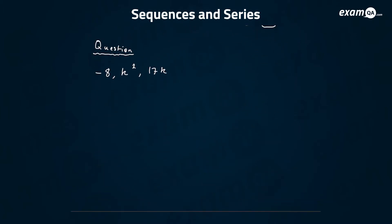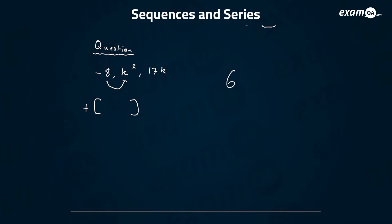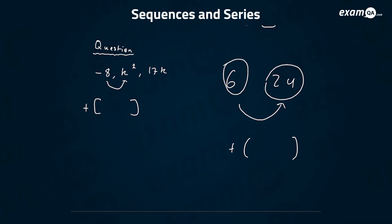For this question, let's work out the common difference. This common difference — this 'plus something' — is the next term take away the previous term. Just like if we went from six to 24, that plus something was 24 take away six, which is just 18. So we're adding 18 each time.